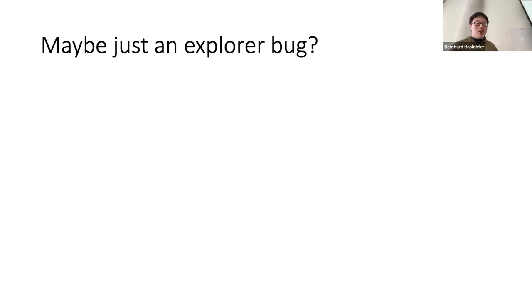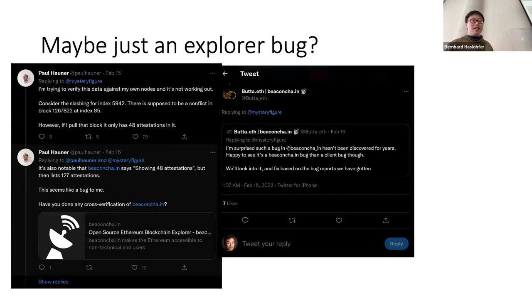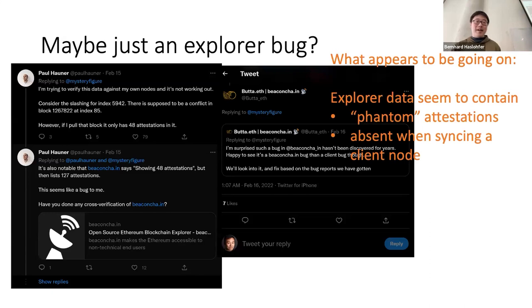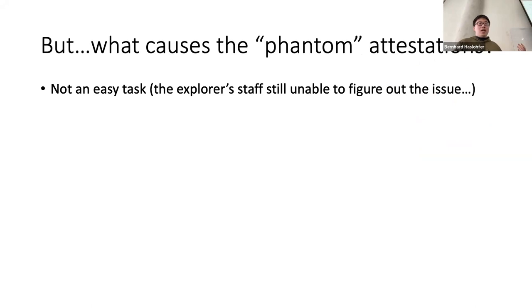But maybe we should explore further, because we used API data from only a few very large data providers. We basically used one of the largest explorer's data to analyze. We made some tweets about this, and people got back to us and proposed that probably the explorer data has something wrong with dealing with a behavior phenomenon called phantom attestations. This is where there are some subtle errors when synchronizing — when a node fails to synchronize with the majority of nodes. So we tend to believe it's not a consensus error.